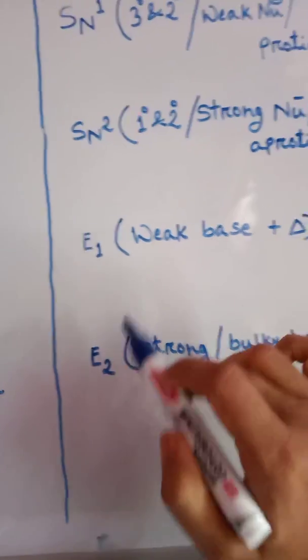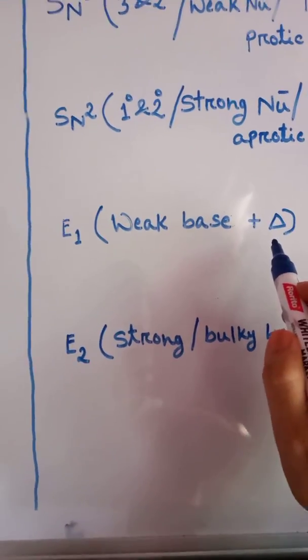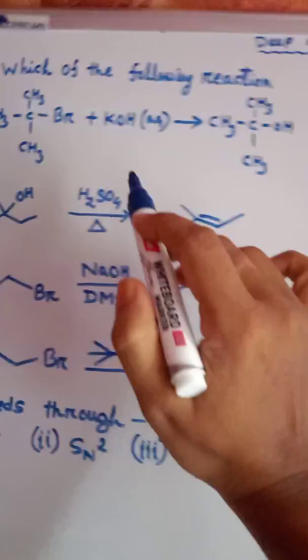In E1, heat is required. In E2, strong or bulky base is required.